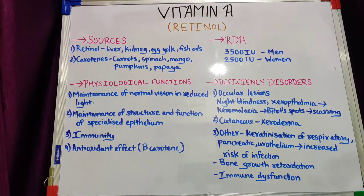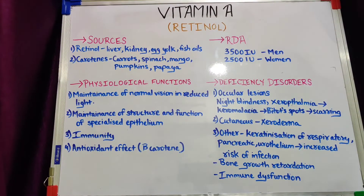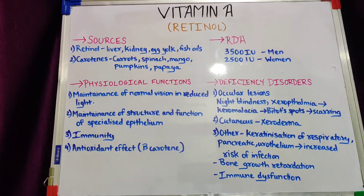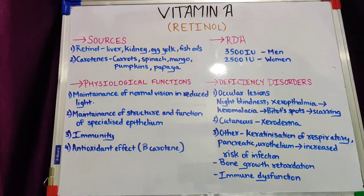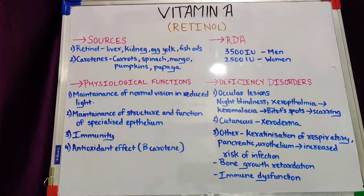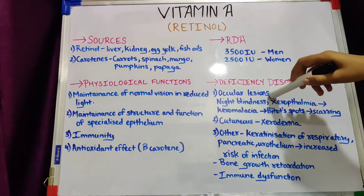Cutaneous lesions refer to manifestations on the skin due to vitamin A deficiency. This is known as xeroderma — a condition characterized by dry, scaly skin due to keratinization, where excessive keratin is deposited in the skin resulting in dry, scaly skin.